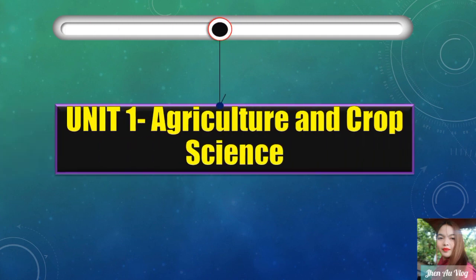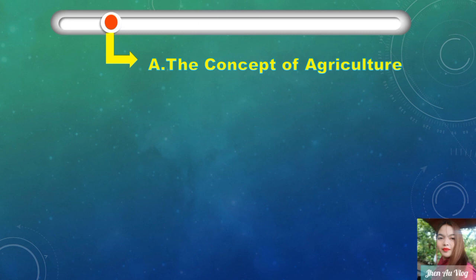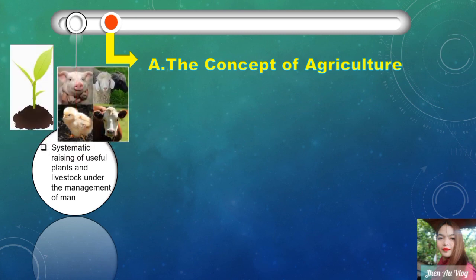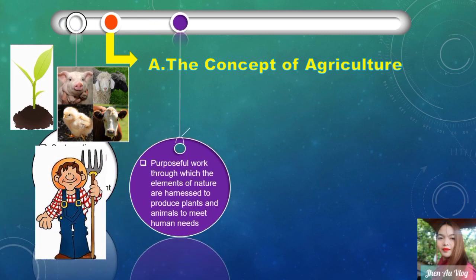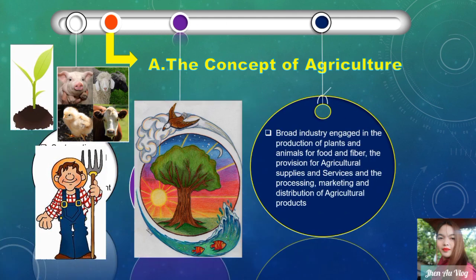Unit 1 is Agriculture and Crop Science. The concept of agriculture is the systematic raising of useful plants and livestock under the management of man — plants and animals with the help of human resources. It is purposeful work through which the elements of nature are harnessed to produce plants and animals to meet human needs. It is also a broad industry engaged in the production of plants and animals for food and fiber, the provision of agricultural supplies and services, and the processing, marketing, and distribution of agricultural products.